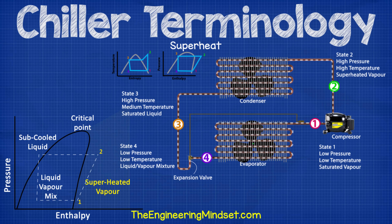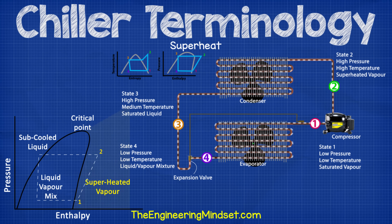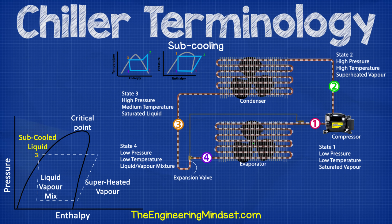Superheat. This refers to the number of degrees Kelvin that the refrigerant is above the boiling point at a particular pressure. A reading of 4 to 8 degrees Kelvin is typical. If the reading is higher, the evaporator is not operating efficiently, and if it is low or zero, there is a fault and it's possible that liquid refrigerant can reach the compressor, which will cause severe damage. Subcooling. This refers to a refrigerant which has been condensed and is at a temperature lower than its boiling point, so it is therefore in a liquid state. It is the difference between the refrigerant's saturation temperature and the actual temperature of the liquid refrigerant.